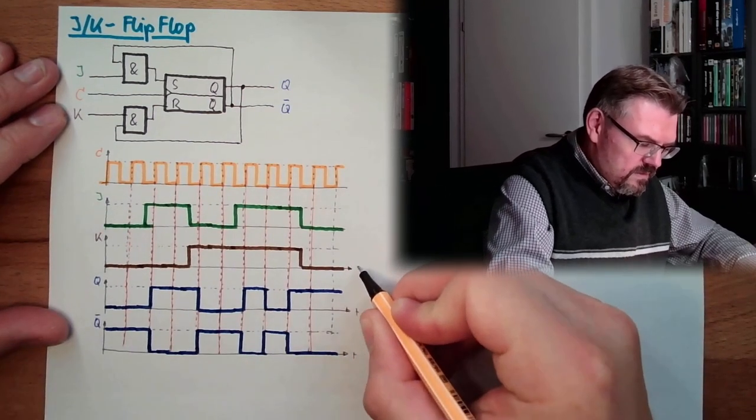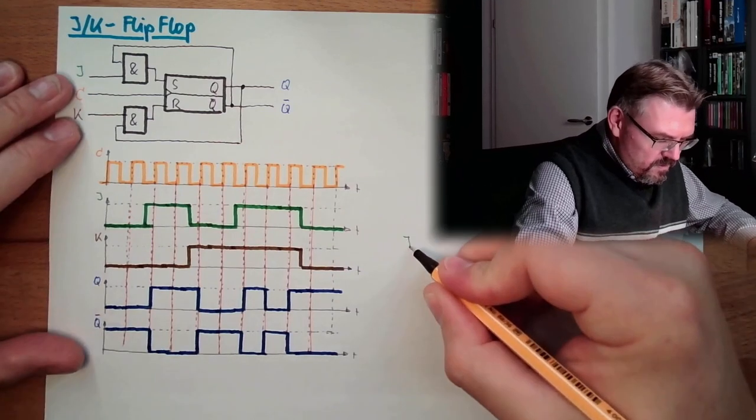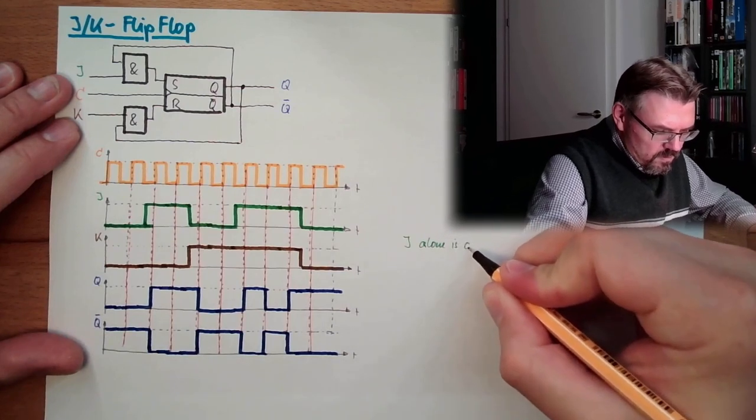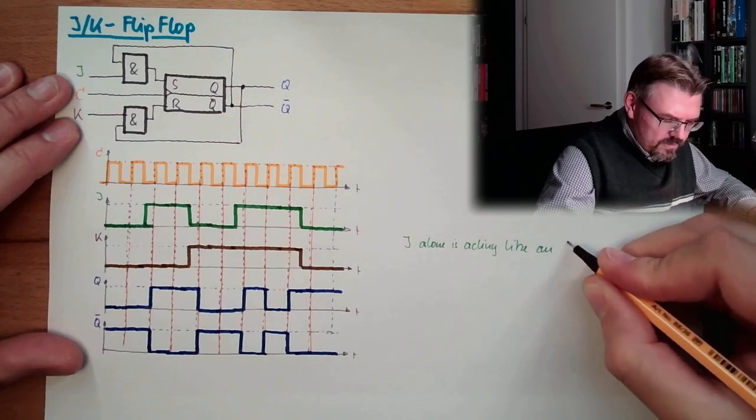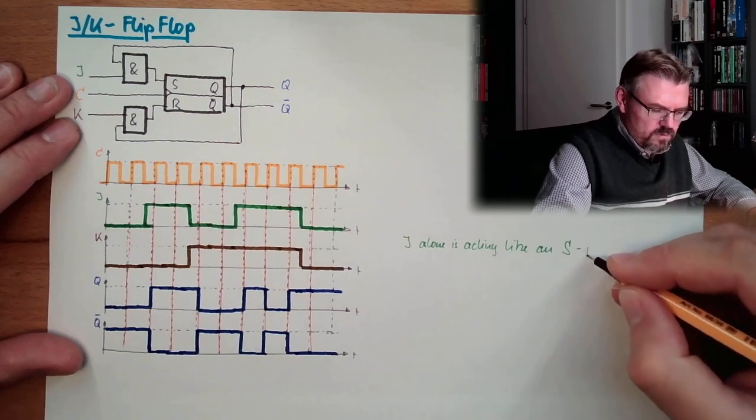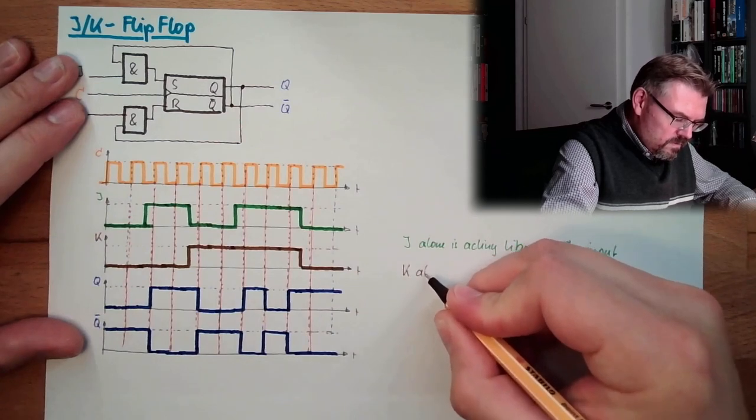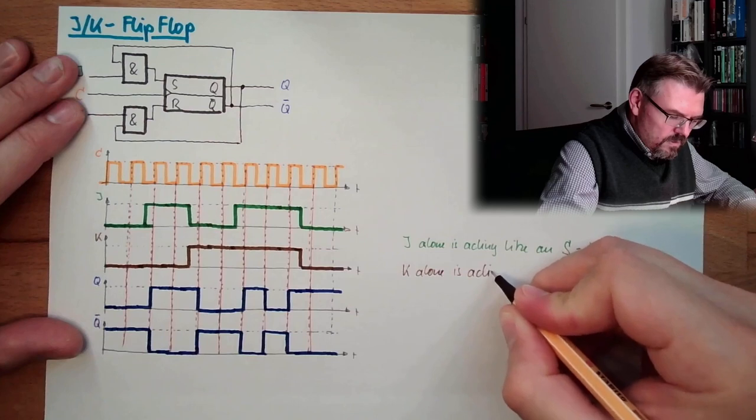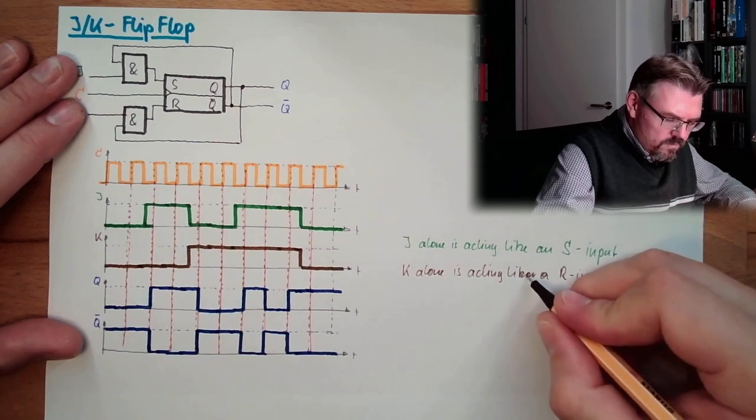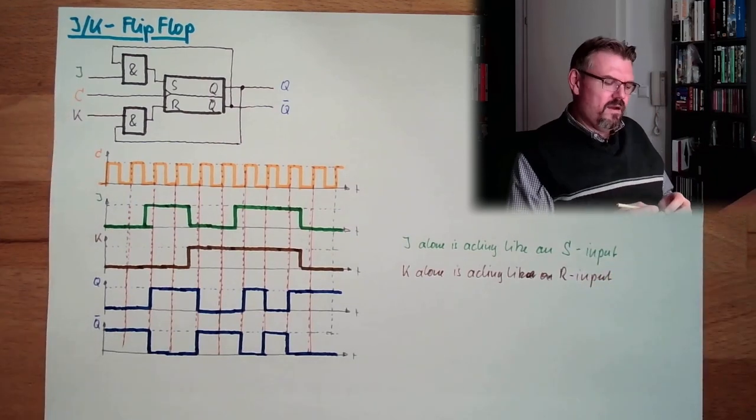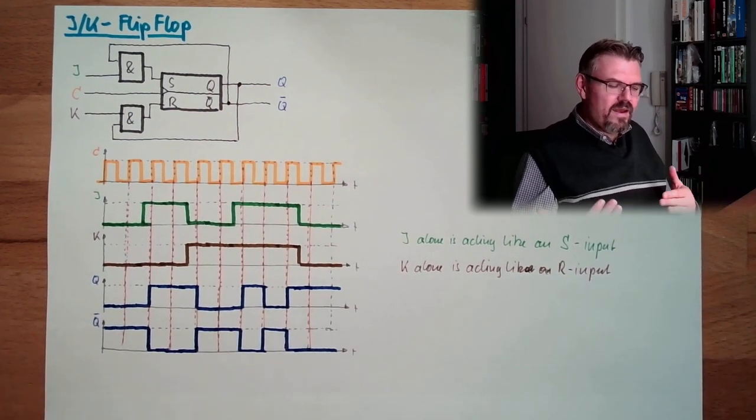Here we have the truth table. So basically, what we have seen now. J alone is acting like an S, an S input. Then we have K alone, and K is acting like an R input. I mean, R is for sure, no vowel, but input is. I think it sounds more correct to say like an S input, like an S input.